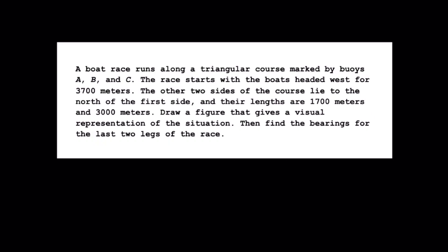Okay, so it looks like a boat runs along a triangular course marked by buoys A, B, and C. The race starts with the boats headed west for 3,700 meters. The other two sides of the course lie to the north of the first side. The lengths are going to be 1,700 meters and 3,000 meters. We need to draw a figure and find the bearings for the last two legs of the race.